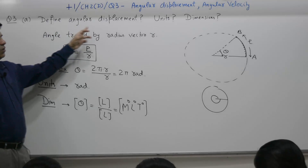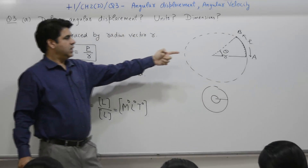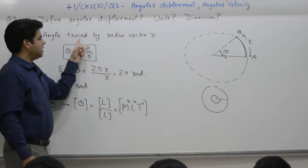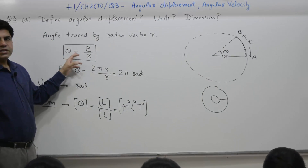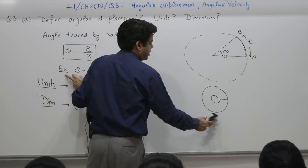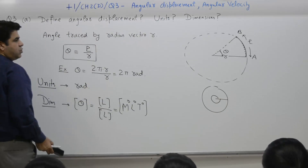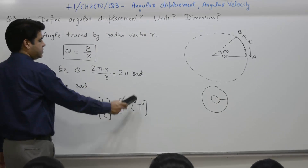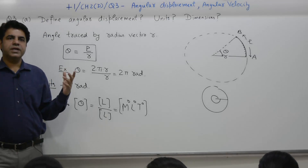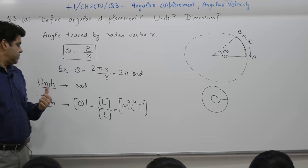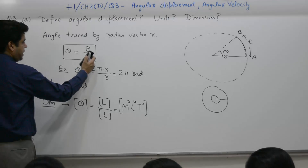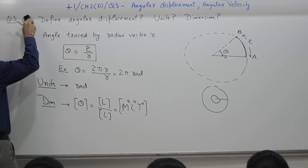To recap: angular displacement theta equals L by R. For example, if a particle covers a full circle, the total distance is 2πR divided by radius R, giving 2π radians. The SI unit is radian — degrees are also used but radian is the SI unit. Dimensions are length by length, giving M0, L0, T0. This completes part A.